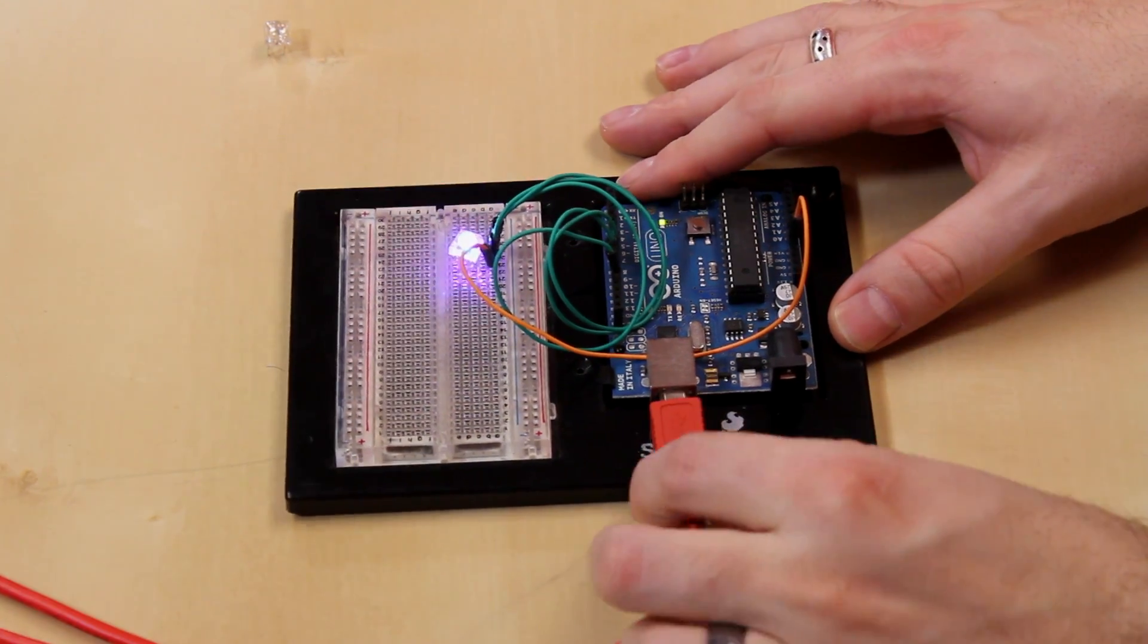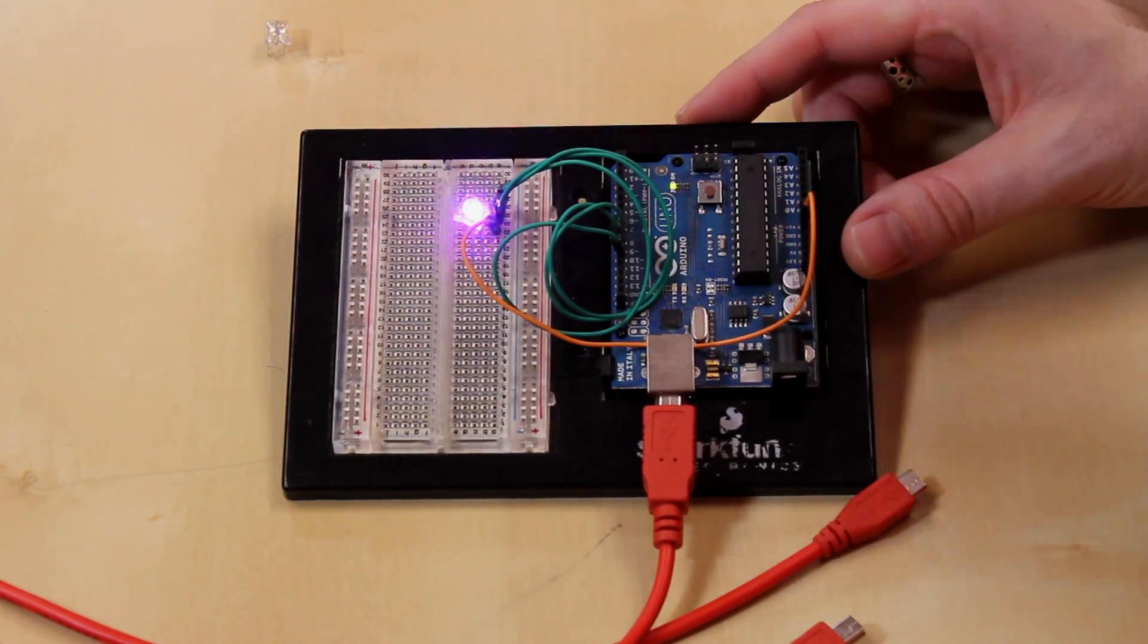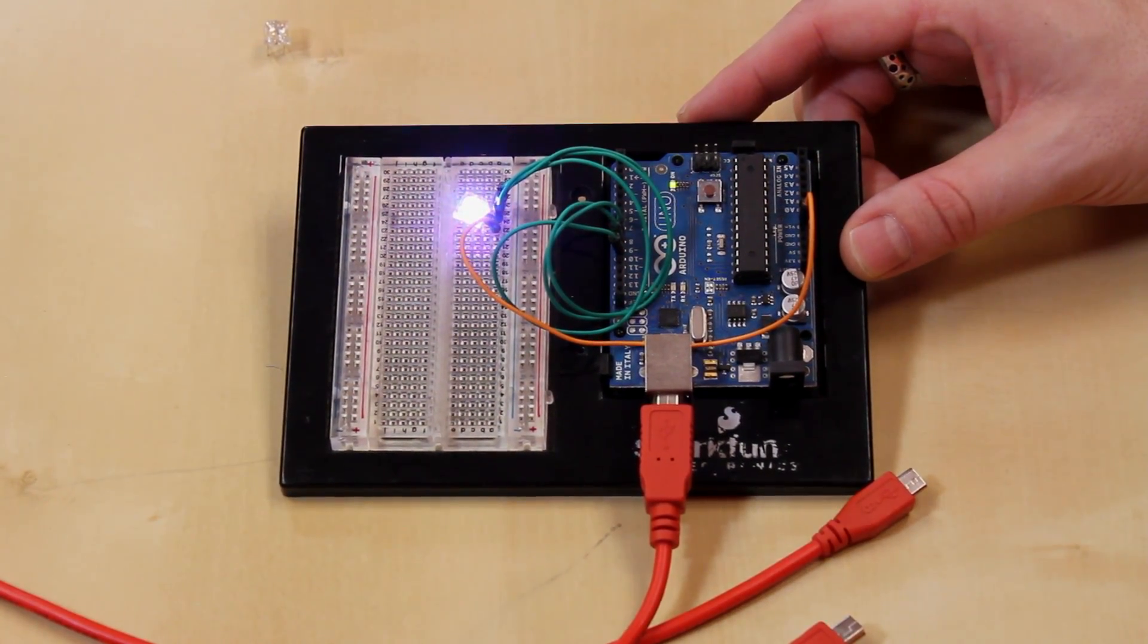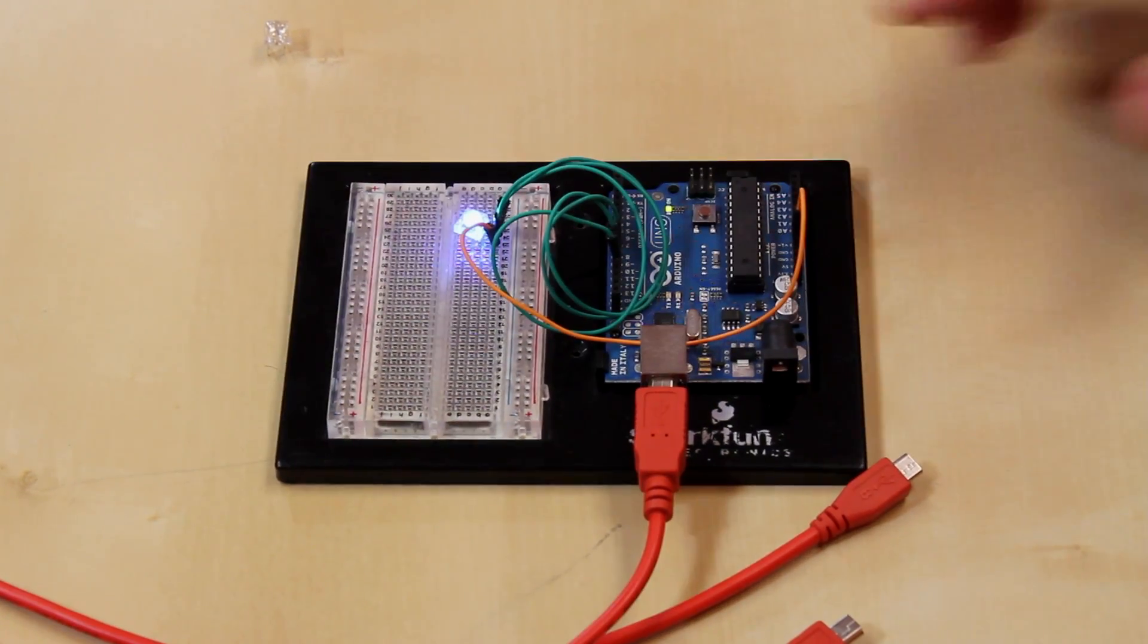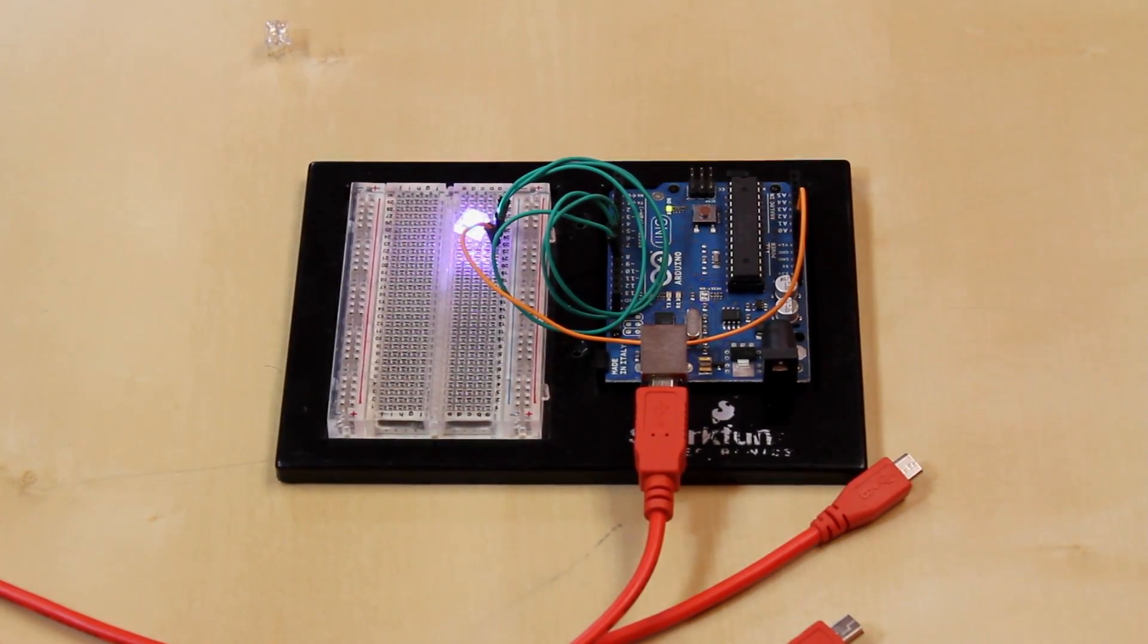So we'll just plug in our cable here and there you go. It's just on a simple little program cycling the RGB values into random. Very simple little RGB LED and we just wanted to show you in the video that it can be plugged into a breadboard, you just have to rotate it a little bit.